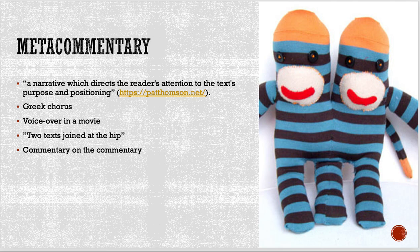There's an illustration in the chapter that says two texts joined at the hip. I have this illustration of the monkey sock puppets put together. The idea is one of the monkeys represents the original text, and then right next to it is another text commenting on that text. The most helpful definition I found when looking up metacommentary is simply that 'meta' means the same thing — so metacommentary is commentary on the commentary, just like metaphysics is physics of the physics.